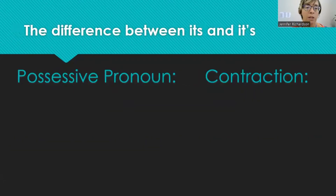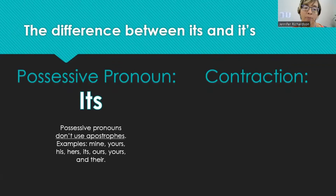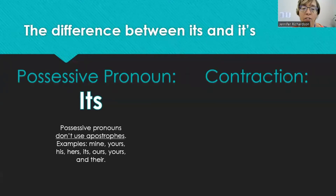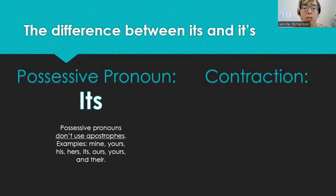Let's give it one more review. The difference between its and it's is really just the apostrophe when you look at it, but there's a big difference in meaning. Its without the apostrophe is a possessive pronoun. Possessive pronouns don't ever use apostrophes. Here are other examples: mine, yours, his, hers, its, ours, yours, and theirs. None of those words have apostrophes.